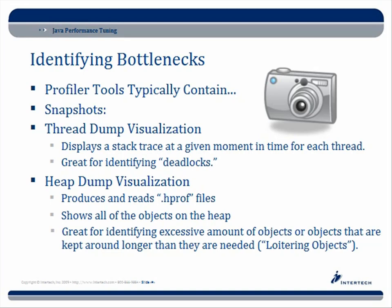Profiler tools typically have snapshots, where you can take a snapshot of a thread dump or a heap dump. A thread dump displays a stack trace at a given moment in time for each thread that's running or maybe waiting or blocked. This is a great way for identifying deadlocks and all the different steps executed to get to that issue. For heap dump visualizations, it often produces a .hprof file showing all objects on the heap at a given moment in time — great for identifying excessive objects or objects kept longer than needed, such as memory leaks or loitering objects.